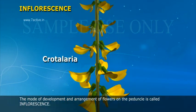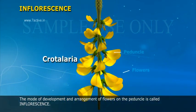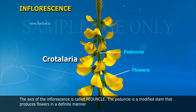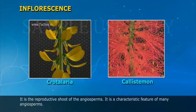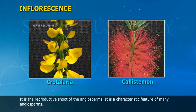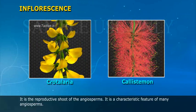The mode of development and arrangement of flowers on the peduncle is called inflorescence. The axis of the inflorescence is called peduncle. The peduncle is a modified stem that produces flowers in a definite manner. It is the reproductive shoot of the angiosperms and is a characteristic feature of many angiosperms.